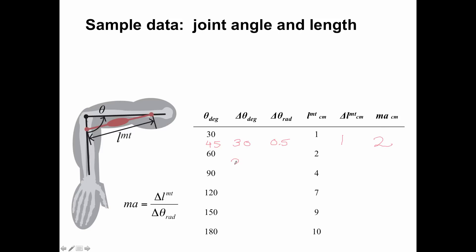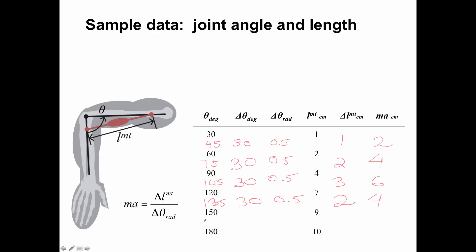Let's do the same thing at 75 degrees. Delta theta is 30 degrees, so 0.5 radians. Now delta L is 2, making the moment arm 4. At 105 degrees, delta theta is 30 degrees — 0.5 radians — and the difference in length is 3, so moment arm is 6. At 135 degrees, delta theta is 0.5 radians, change in length is 2 again, so moment arm is 4. And at 165 degrees, delta theta is 0.5 radians, change in length is 1, so we're back down to moment arm of 2.